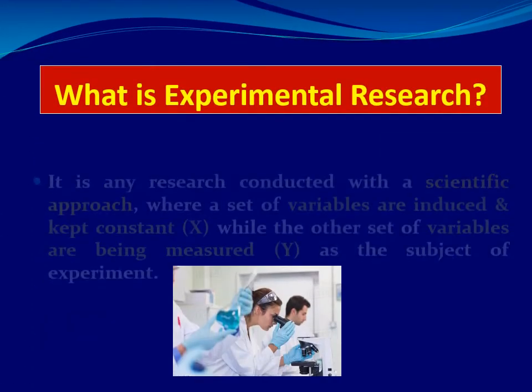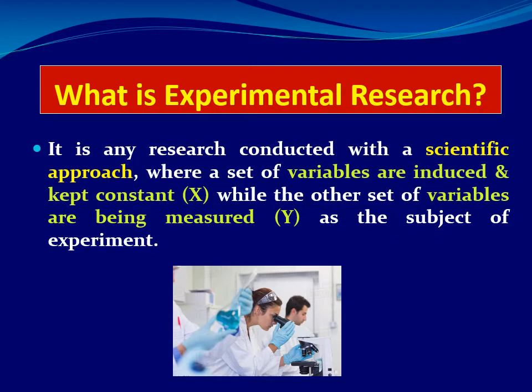What is experimental research? This is any research conducted in a scientific approach where there are two sets of variables. One set of variables are induced and kept constant — called X variables — while the other set of variables are being measured, which are the Y variables. The Y variable is the measurable variable, which is the subject of the experiment.